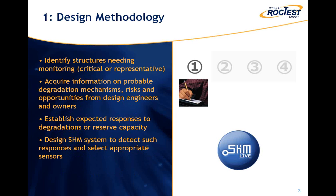The first step is the design methodology. We will identify structures needing monitoring, including critical or representative structures, acquire information on probable degradation mechanisms, risks and opportunities from design engineers and the owner, and establish expected responses to those degradation mechanisms or to available reserve capacity in the structure. This allows us to design an optimal structural health monitoring system to detect such responses and select the appropriate sensors — so that the system can answer the questions from the owner.